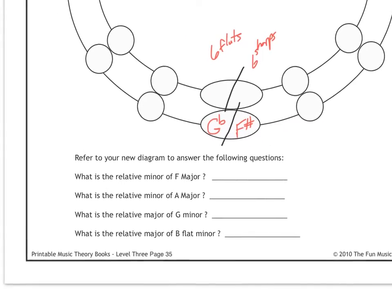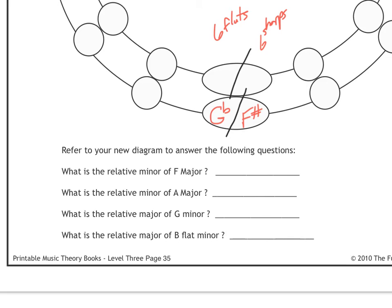Once you have that done, it should help you answer these questions below. Refer to your new diagram to answer the following questions. What is the relative minor of F major? Relative minor of A major? Look at the connections. So pause the video right now. Complete that circle of fifths in its entirety. Go for it.